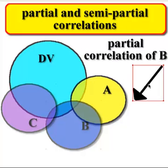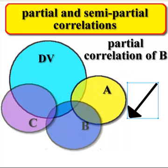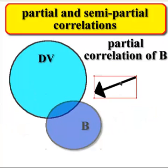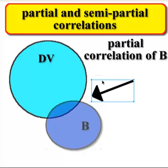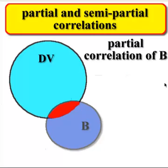So a partial correlation of B, for example, is this chunk right here. It's where B and DV overlap. And because it's a partial, it also includes any kind of overlap of the other IVs. So a partial correlation is just this picture, it's the overlap here. I hope this little red thing helps. So this red little chunk right here is the partial correlation of B. Got it?